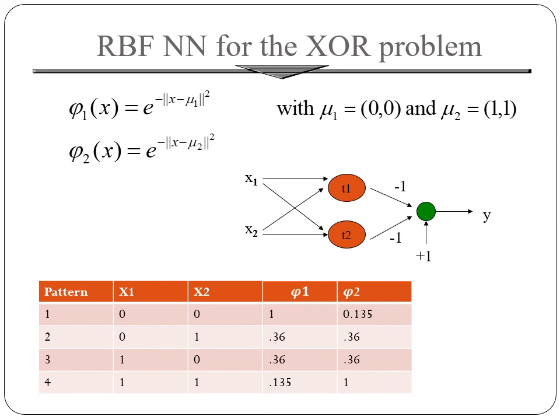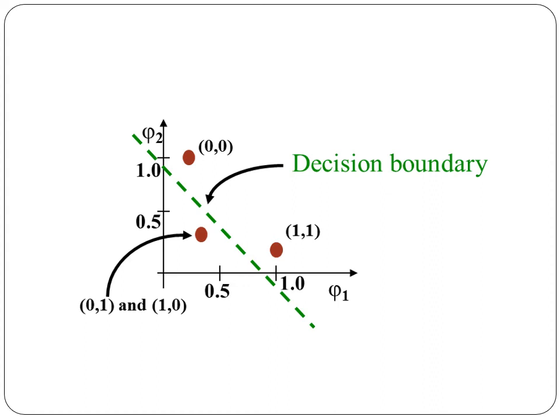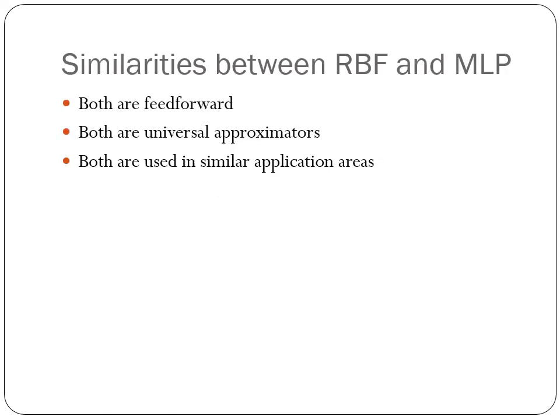Now when this is being graphically represented with respect to the radial basis φ1 and φ2, we can see that the points (0,0) and (1,1) are mapped below a particular line. The decisive boundary is the boundary which separates between the two classes, above which belongs to a particular class. Now in our case it is class 1 and below that it belongs to another class which is class 2.